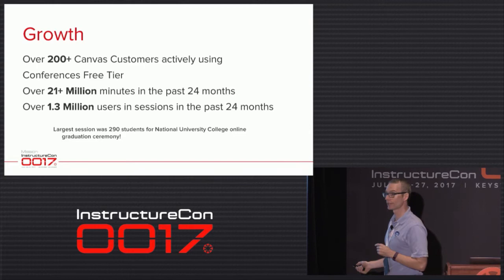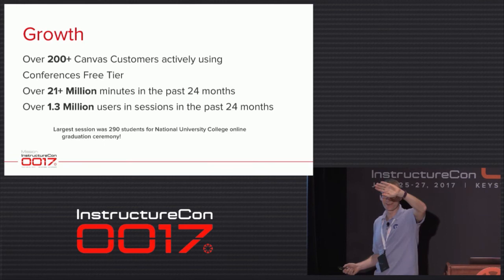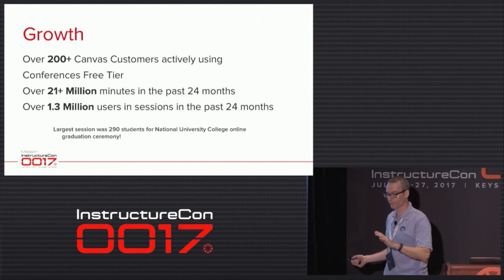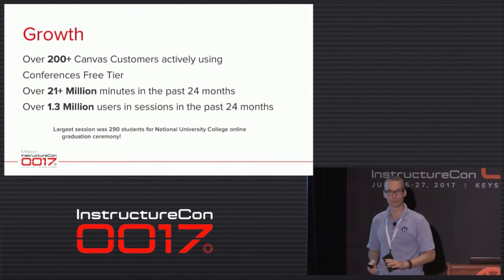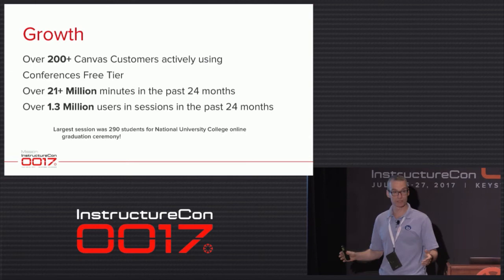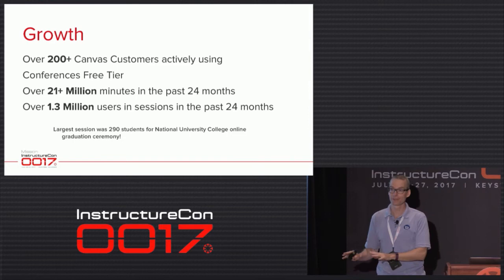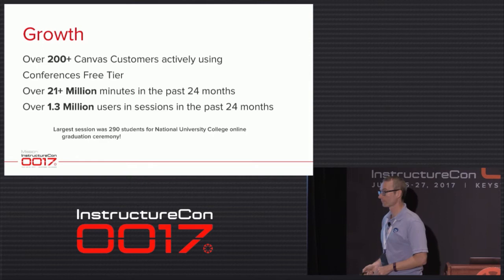National University College is a fully online university running on Canvas and using Canvas Conferences. They recently had their graduation ceremony online — the chancellor, the mascot — with 290 students all high-fiving each other in chat as names were read on the honor roll. That's a sense of how large we can support. We say 100 users or less in our documentation because we're conservative and like to under-promise and over-deliver, but we can handle pretty large sizes.